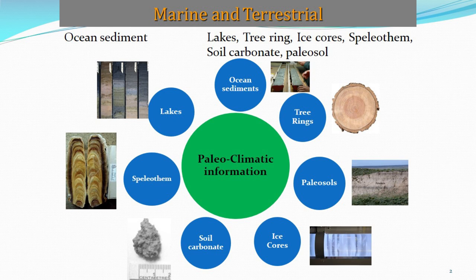If you look towards tree rings, each and every tree ring provides information regarding the annual paleoclimatic condition of the area in which the tree was grown. Interestingly, soil carbonate nodules form in the soil zone and provide useful information regarding paleomonsoon rainfall and paleo-vegetation history. All this information is extracted from these proxies with the help of isotope ratio mass spectrometer.